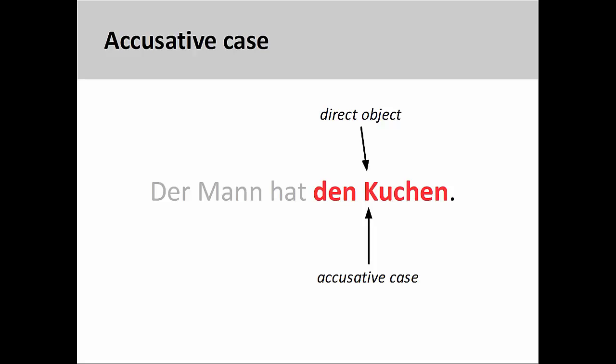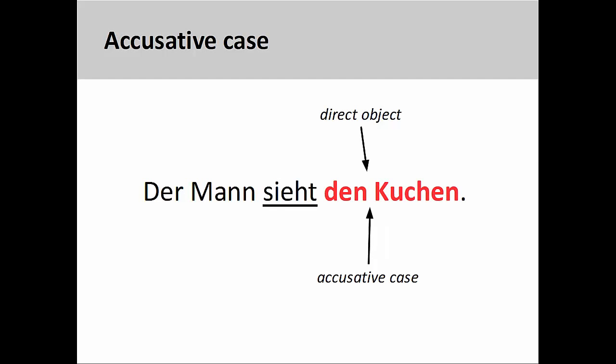It is easy to see how the nominative and accusative cases work together when the verb expresses a very physical action. Here we can perhaps visualize the man carrying or holding the cake. But the same relationship between nominative and accusative exists when the verb expresses no physical contact between the subject and its direct object. Here the man sees — 'sieht' — the cake.